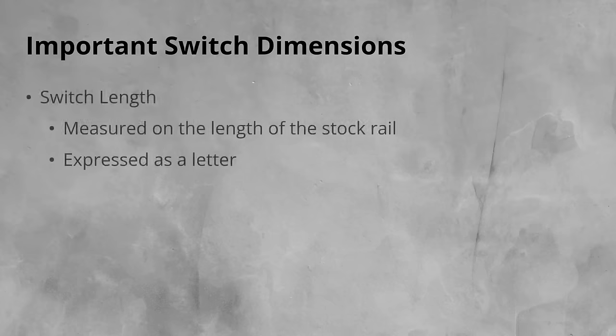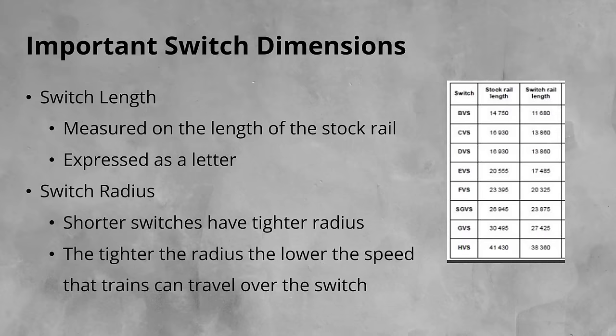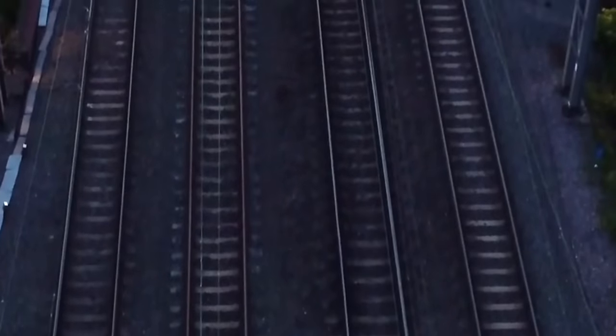There are two dimensions that are important when it comes to switches: the switch length and the radius. The length of the switch is measured from the end of the stock rail at the front of the switch, to where the switch panel ends after the heel blocks. It is expressed as a letter, with the shortest switch denoted as an A switch, right up to the longest switches, H switches. The shorter the switch the tighter the radius the turnout has, although the exact radius depends on the overall track design on site. H switches, with their longer lengths and large turnout radii, are suitable for the highest speeds. Switch length and radius are key drivers in the overall layout and footprint of railway junctions.